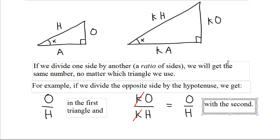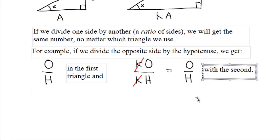So in other words, no matter how big your triangle, big or small your triangle is, if you have an angle of x, the opposite side divided by the hypotenuse will always be the same O over H.